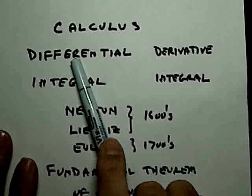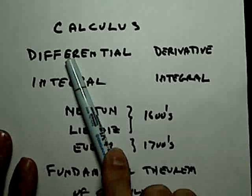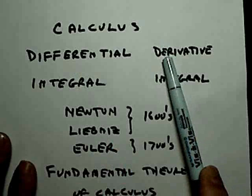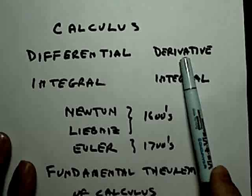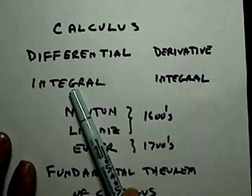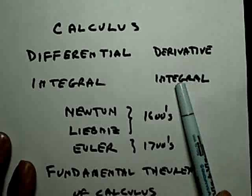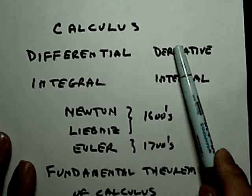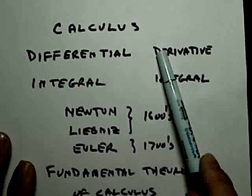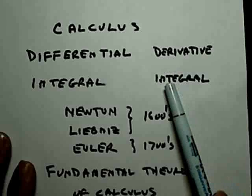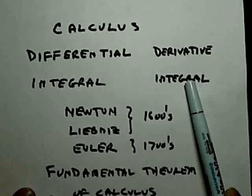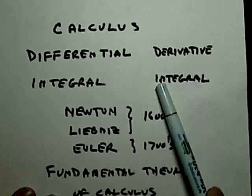First of all, there are two types of calculus. There's what's called differential calculus, and it involves an operation called a derivative, and then there's integral calculus, which involves an operation called integral. Now these are two quite different concepts. Derivatives involve rates of change, and integrals involve the summation of infinite sums or the accumulation of things like area or volume.